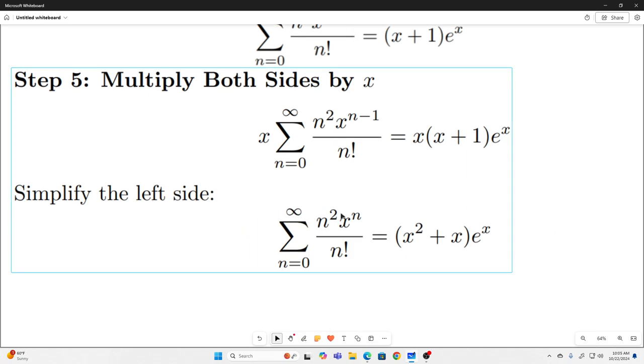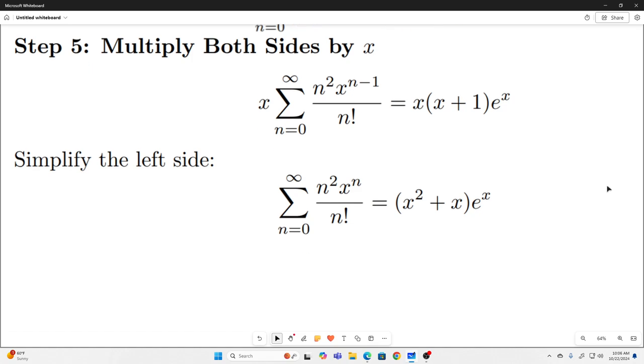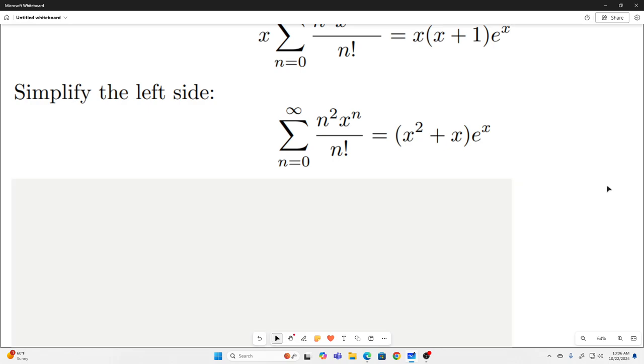So like I said, we've got an n squared now. If we differentiate one more time, we'll have an n cubed, which makes an expression that almost matches the sum we want to find.